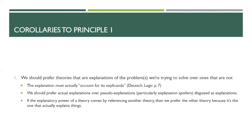Corollaries to principle one: we should prefer theories that are explanations of the problems we're trying to solve. Deutsch says the explanation must actually account for the explicanda — the thing you're trying to explain. We should prefer actual explanations over pseudo-explanations, particularly explanation spoilers disguised as explanations. If the explanatory power of a theory comes from referencing another theory, we prefer that other theory. There are philosophical theories that claim explanation doesn't matter, but I'm claiming very strongly it absolutely does — it's the core of what makes science able to make progress.